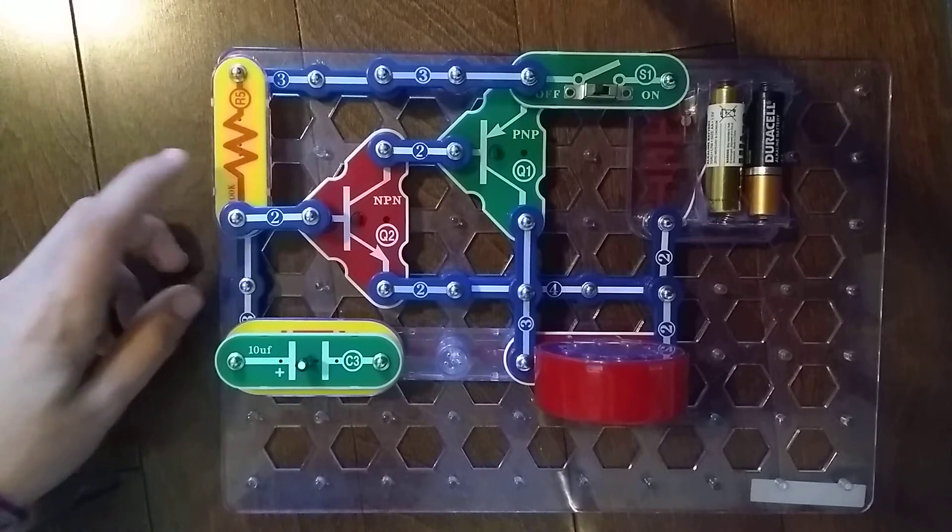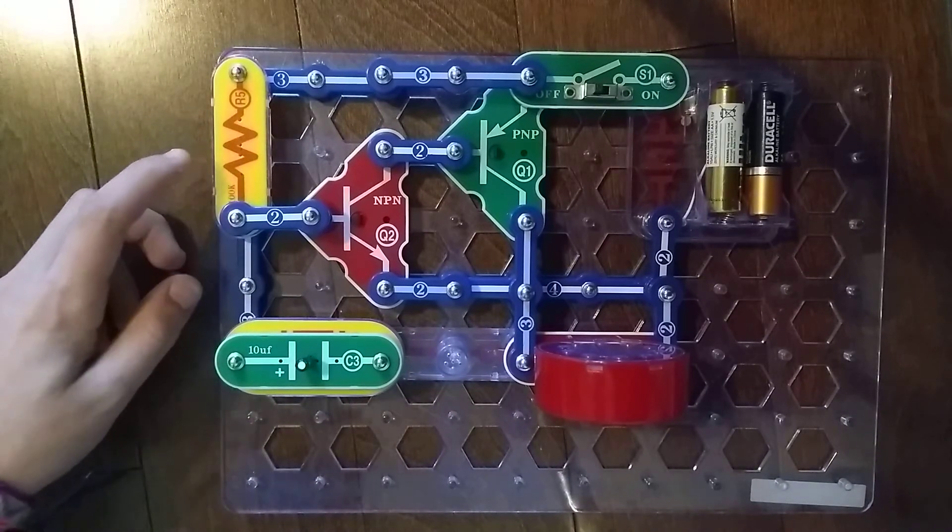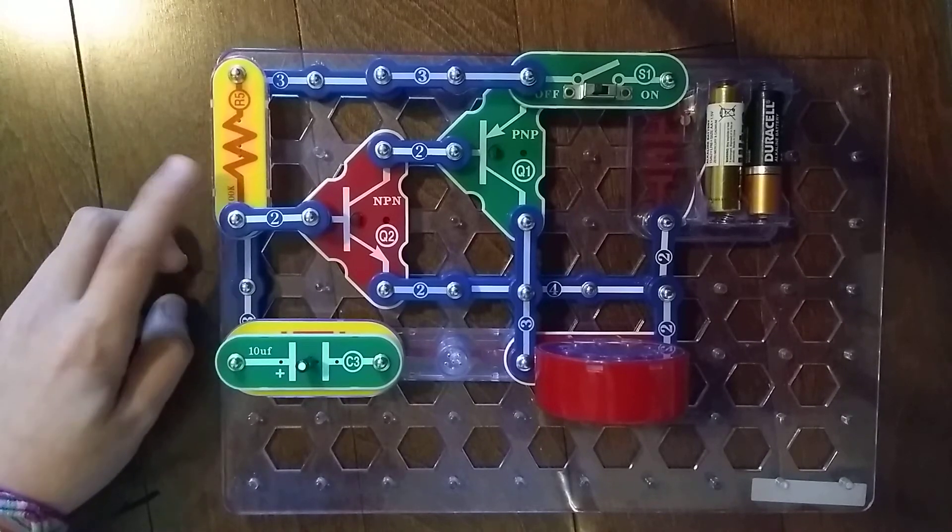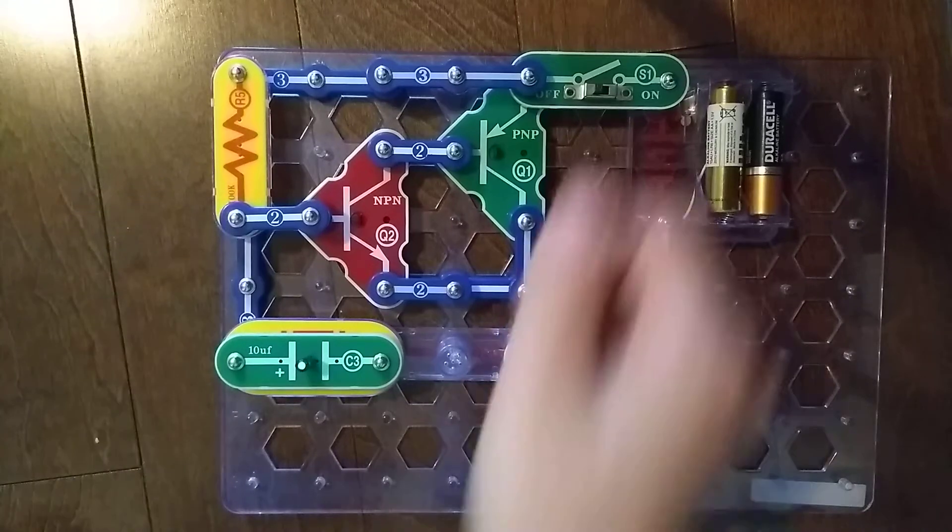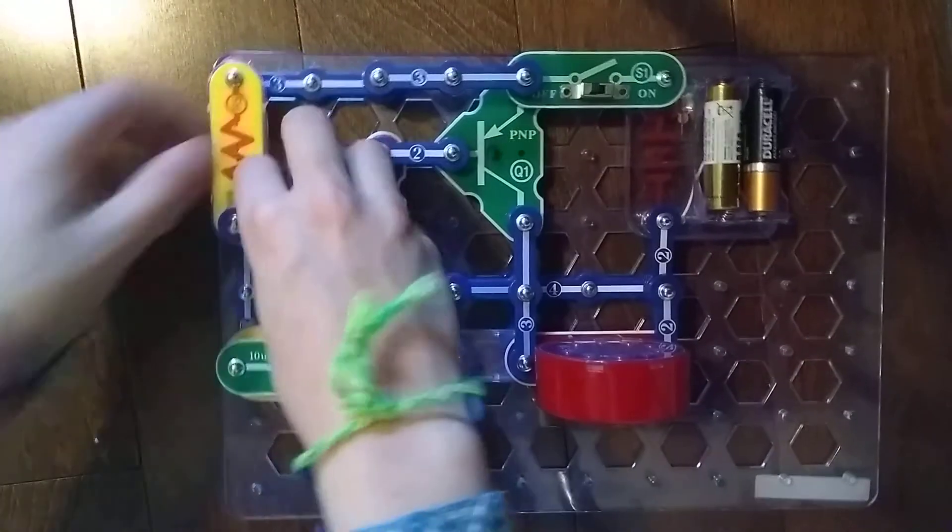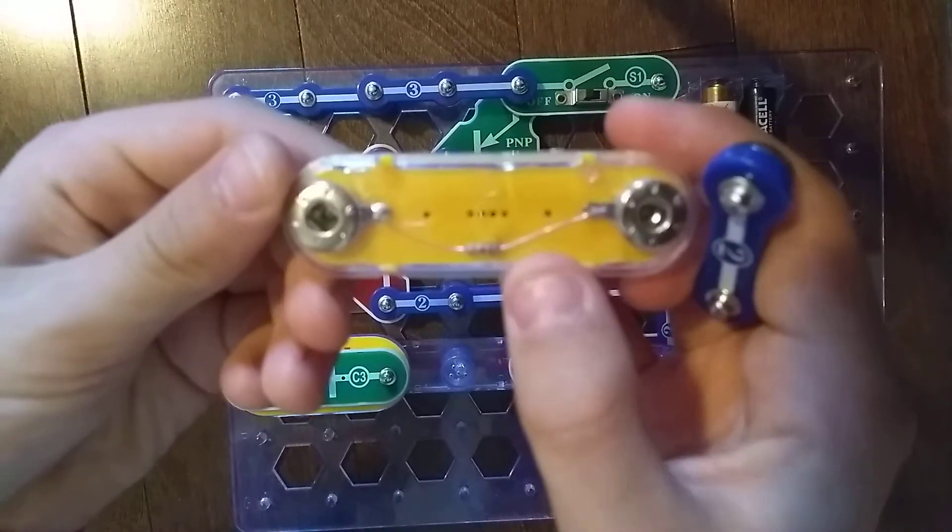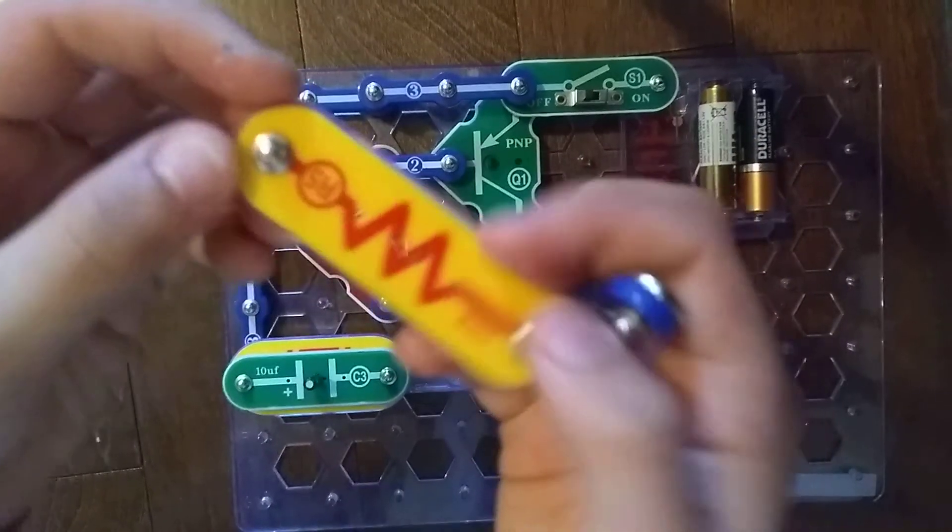But by the way, this is a fake 100K resistor R5. It's actually fake, guys, but it works pretty well. Do you see how it has a clear back? And there's a resistor on the back as well? This is fake.